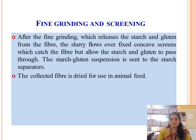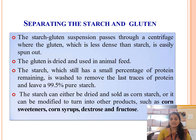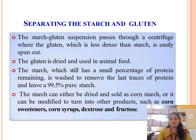After separating starch and gluten, the suspension passes through a centrifuge where the gluten — which is less dense than starch — is easily spun out. The gluten is then dried and used in animal feeds. The remaining starch still has a small percentage of protein, which is removed to leave 99% pure starch.